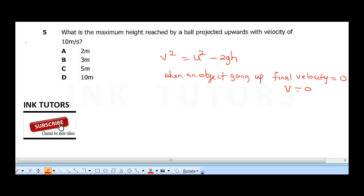The final velocity is zero. So this is something you have to know: v is zero. This is an equation you have to know to solve this question. So this means zero is equal to u squared minus 2gh.